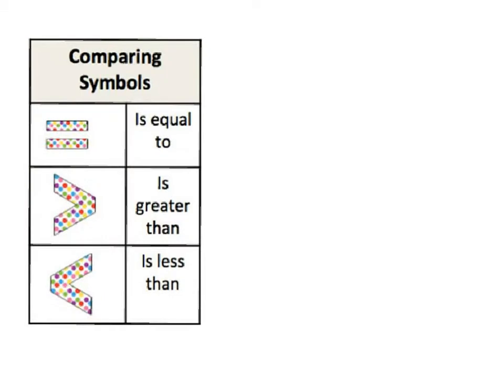When comparing, numbers can either be equal, greater than, or less than each other. Keep track of which symbol is which. A helpful trick: the less than symbol looks like an L — if you squish the L up, that makes the less than symbol.